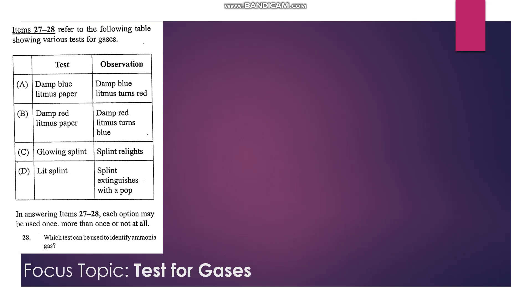Number 28: Which test can be used to identify ammonia gas? Ammonia is a basic gas and therefore it will turn red litmus paper blue. So B is the answer.